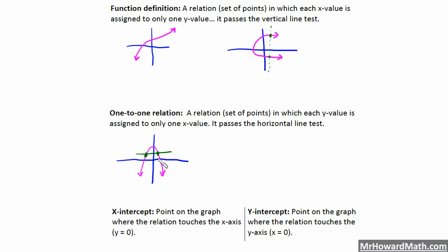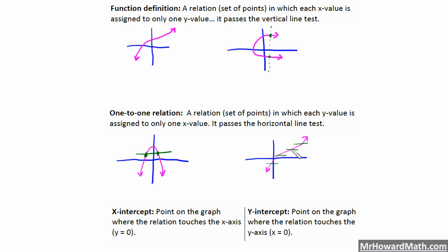Let's draw an example of one that would be considered one-to-one. We can draw horizontal lines wherever we want and it only hits the graph once, so this would be considered a one-to-one relation. To summarize: a function passes the vertical line test; one-to-one passes the horizontal line test. The parabola passes the vertical line test so it is a function, but fails the horizontal line test so it is not one-to-one. The second example passes both, so it is a one-to-one function.